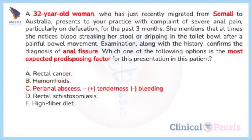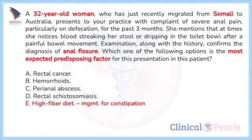Perianal abscesses, option C, can present with painful or tender swellings around the anus. Although they might cause pain on defecation as the feces passes and compresses an abscess, they do not cause rectal bleeding or anal fissure. Perianal fistulae, however, can develop as a consequence of perianal abscess. High fiber diet, option E, does not predispose to anal fissure — it is actually a management step in both hemorrhoids and anal fissures.